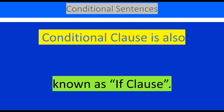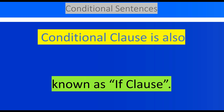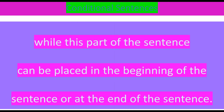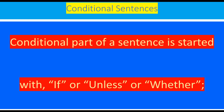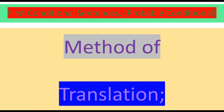The conditional clause is also known as the if-clause, and this part of the sentence can be placed at the beginning or at the end of the sentence. The result, outcome, or consequence clause is known as the main clause. The conditional part of a sentence is started with 'if,' 'unless,' or 'whether.'